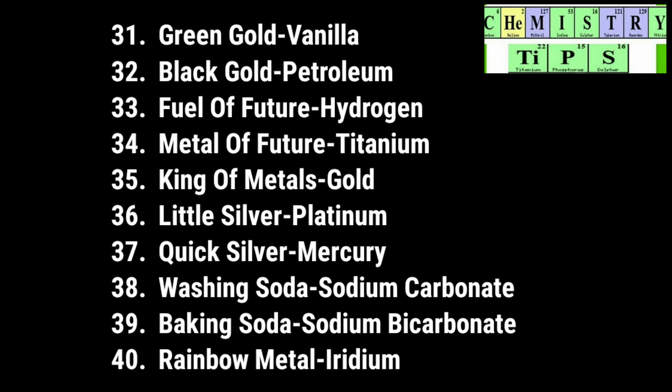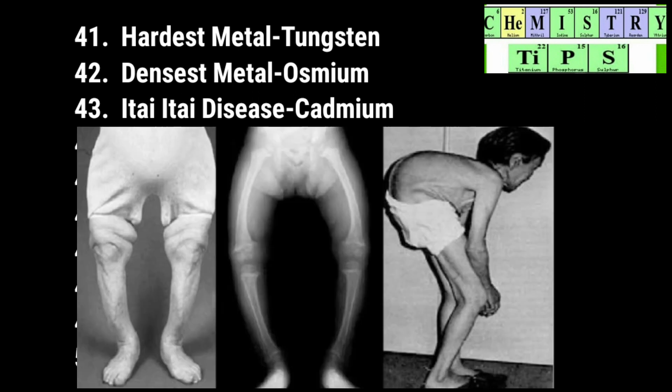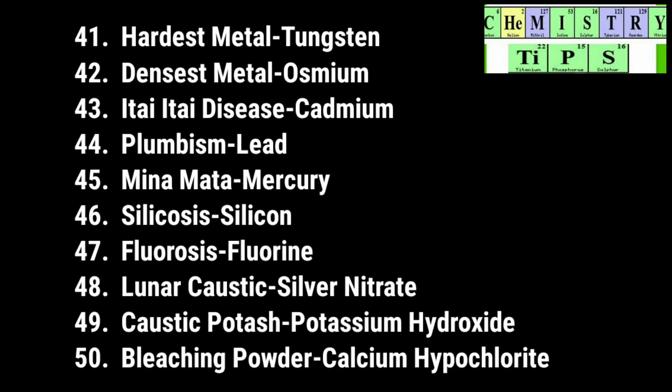Rainbow metal is the name of iridium. Next, hardest metal — that is tungsten. Densest metal is osmium. Itai-itai disease — cadmium; itai-itai disease is caused by cadmium. Plumbism is caused by lead. Minamata disease is caused by mercury, related to the Minamata tragedy. Silicosis is caused by silicon. Fluorosis is caused by fluorine.